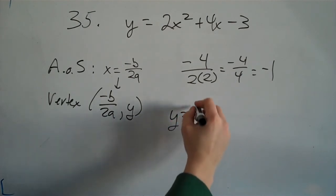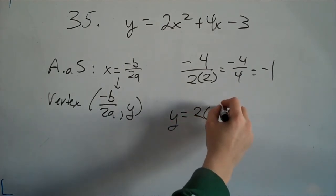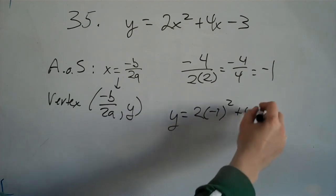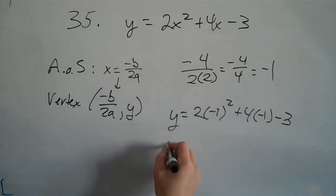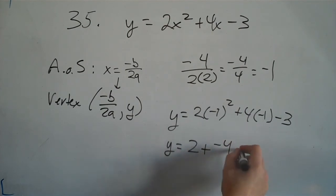So now to find y, I put x back inside. 2 times negative 1 squared plus 4 times negative 1 minus 3. So y equals negative 1 squared is 1, times 2, plus this is negative 4, minus 3. So y is 2 plus negative 4 is negative 2, minus 3 is negative 5.